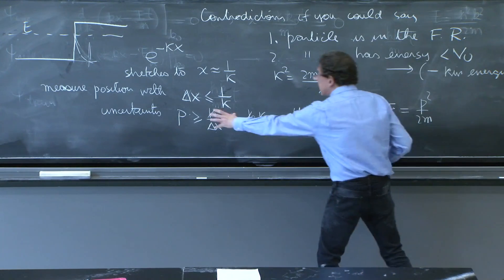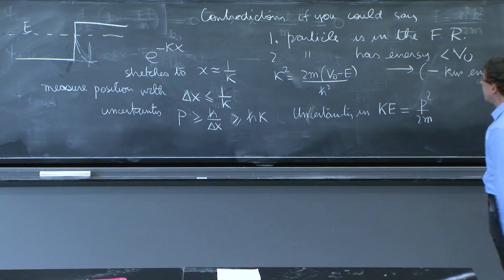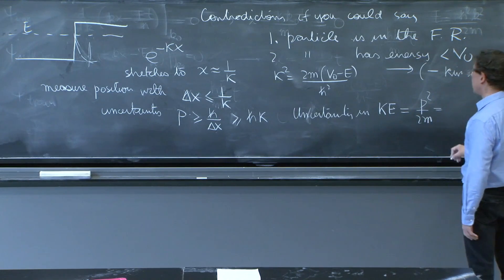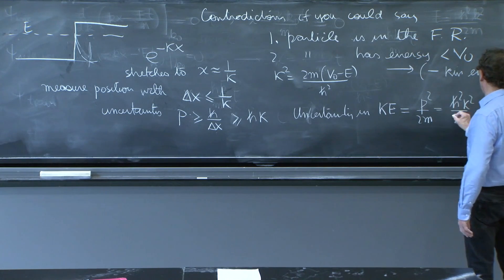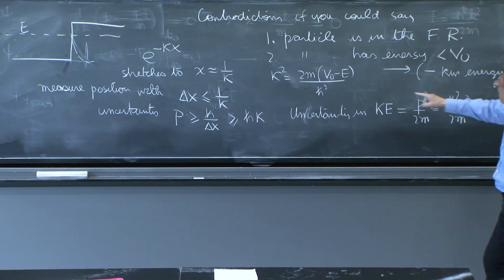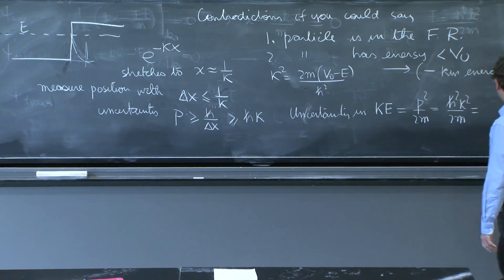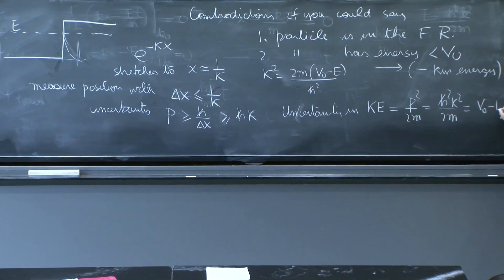It's P²/2m, where P is this uncertain momentum. So this equals ℏ²κ²/2m, which equals V₀ - E.